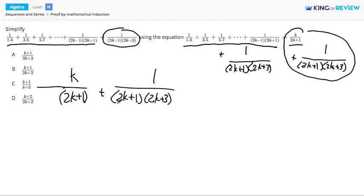The first fraction has the 2k plus 1 factor, but it needs the 2k plus 3 factor, and so that we're not changing this fraction, we need to multiply the numerator by the same thing.